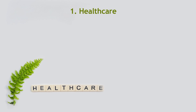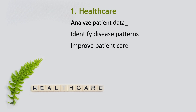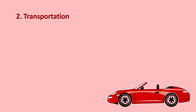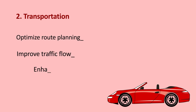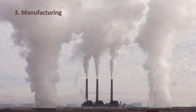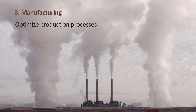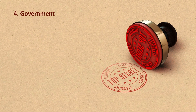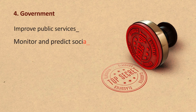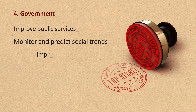Big data is used in the following areas. One: healthcare — big data is used to analyze patient data, identify disease patterns, and improve patient care. Two: transportation — big data is used to optimize route planning, improve traffic flow, and enhance logistics. Three: manufacturing — big data is used to optimize production, reduce downtime, and improve product quality. Four: government — big data is used to improve public services, monitor and predict social trends, and improve public safety.